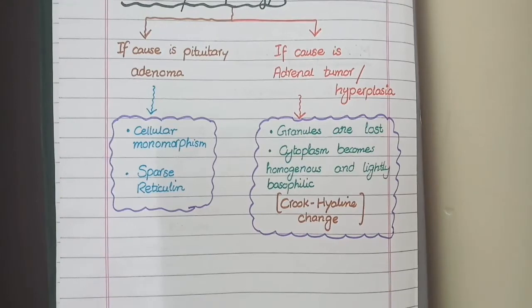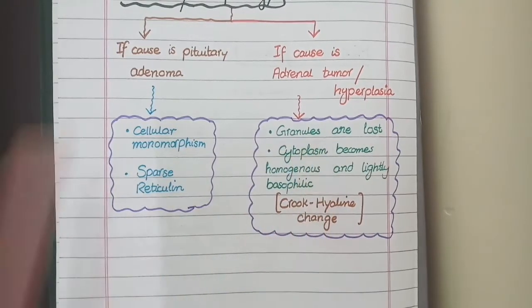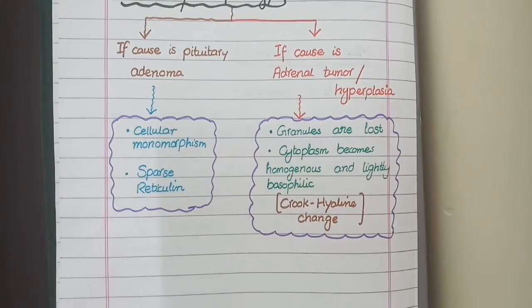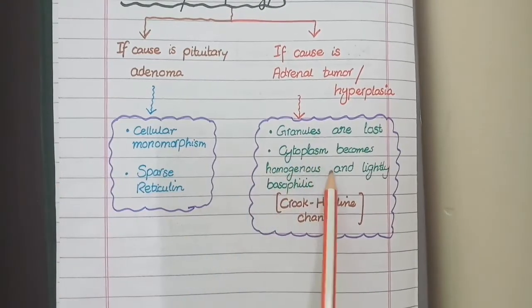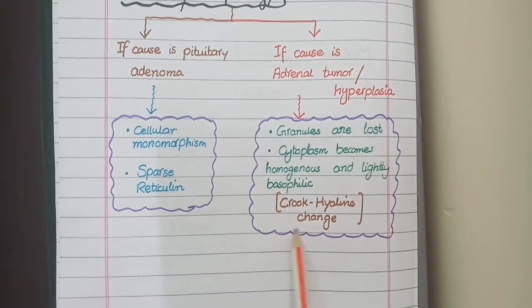This lack of secretory activity results in loss of granules from the cytoplasm of the cells. With the loss of granules, the cytoplasm becomes homogenous and lightly basophilic. This change is called Crooke's hyaline change.